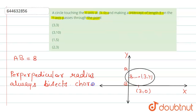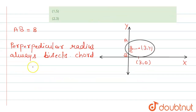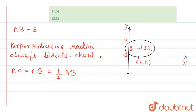This implies that if we take the midpoint C of AB, then AC equals CB. Since AB equals 8, we have AC equals CB equals one-half of AB, which gives AC equals CB equals 4.